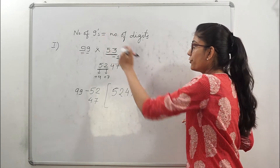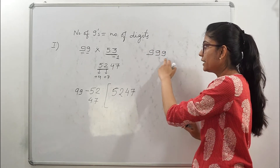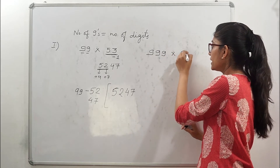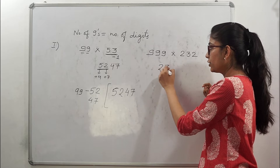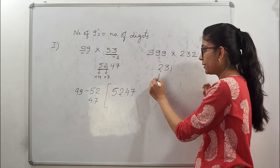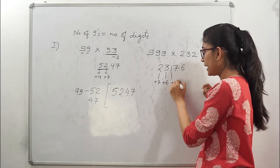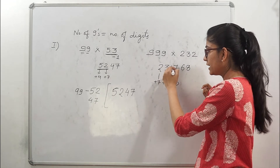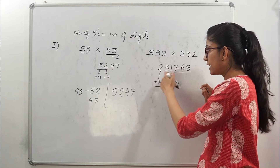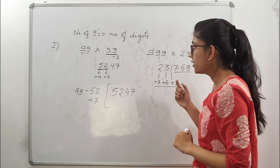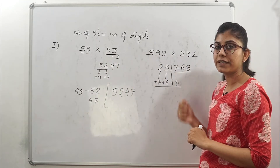Let's try one more with 3 nines. 999 × 232. Here, 2 plus 7 is 9, 3 plus 6 is 9, and 1 plus 8 is 9. We add 6 and we add 8. So these are the numbers that add up to 9, and that is why the last 3 digits are calculated this way. This is the trick where number of 9s equals number of digits.